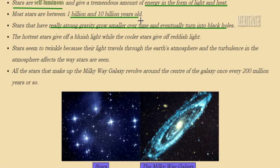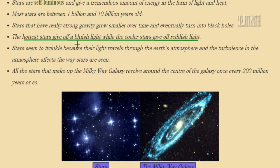The age of a star is almost between 1 billion to 10 billion years old. Stars are very old and have strong gravity between them. They grow smaller over time and then develop into black holes. The hottest star gives bluish light and the coolest star gives reddish light, so there is a color difference between a hot star and a coolest star.